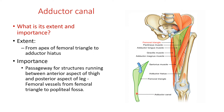What is the importance of this adductor canal? It is a passage for structures between the anterior aspect of the thigh and the posterior aspect, which is the popliteal fossa. The structures passing between these two areas are the femoral vessels — that is the femoral artery and femoral vein — extending from the femoral triangle to the popliteal fossa.